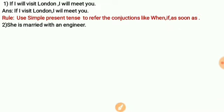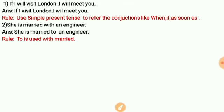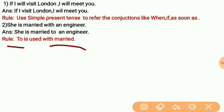Number two: 'She is married with an engineer.' Many people make this error. The correct answer is 'She is married to an engineer,' not 'married with.' So it is 'married to an engineer,' not 'married with an engineer.'